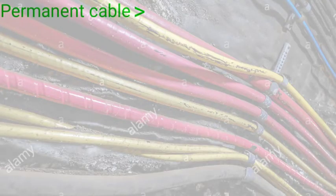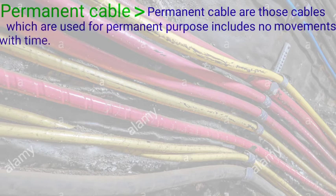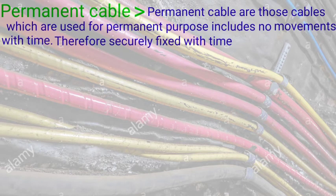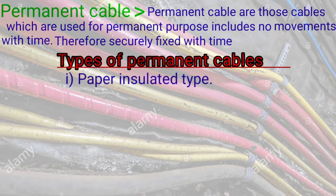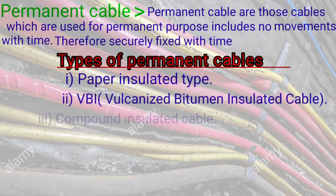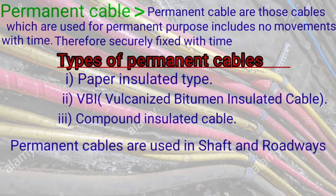A permanent cable is one which is permanently installed — there is no movement once installed. Permanent cable is of three types: paper insulated type, vulcanized bitumen insulated cable, and compound insulated cable. Permanent cables are used in shafts and roadways.